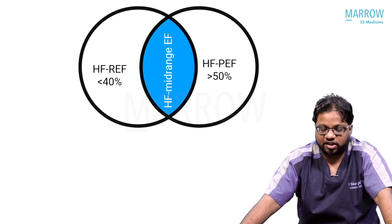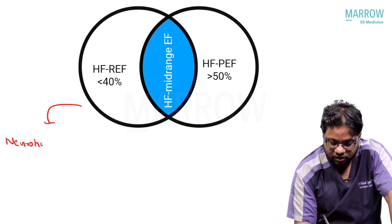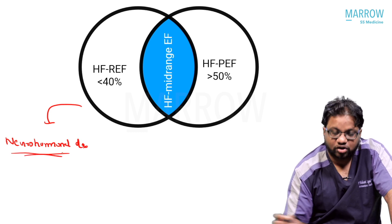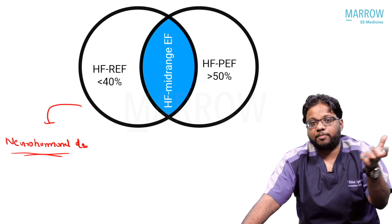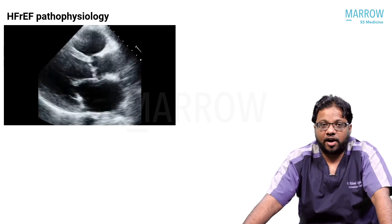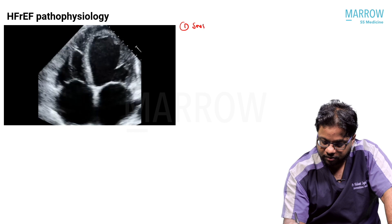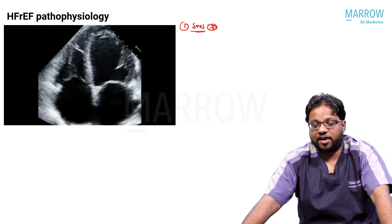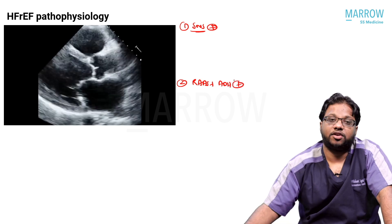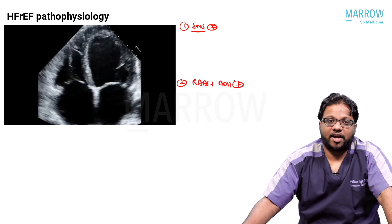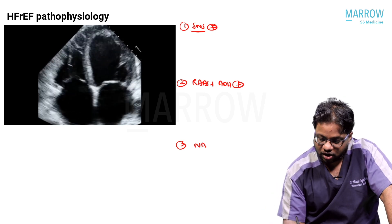Heart failure with reduced ejection fraction is a neurohormonal disease. You have a dilated, poorly contracting heart with decreased cardiac output. Three key neurohormonal changes occur: one, the sympathetic nervous system gets stimulated — releasing sympathetic amines like adrenaline and noradrenaline; two, the renin-angiotensin-aldosterone system and ADH get activated due to decreased renal blood flow; and three, atrial and ventricular stretch activates the natriuretic peptide system.